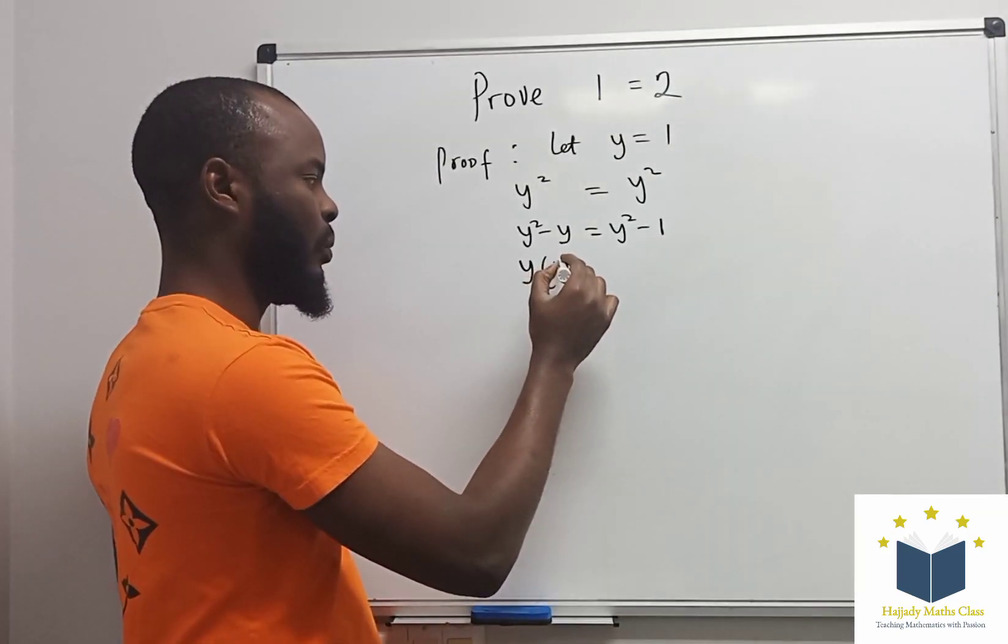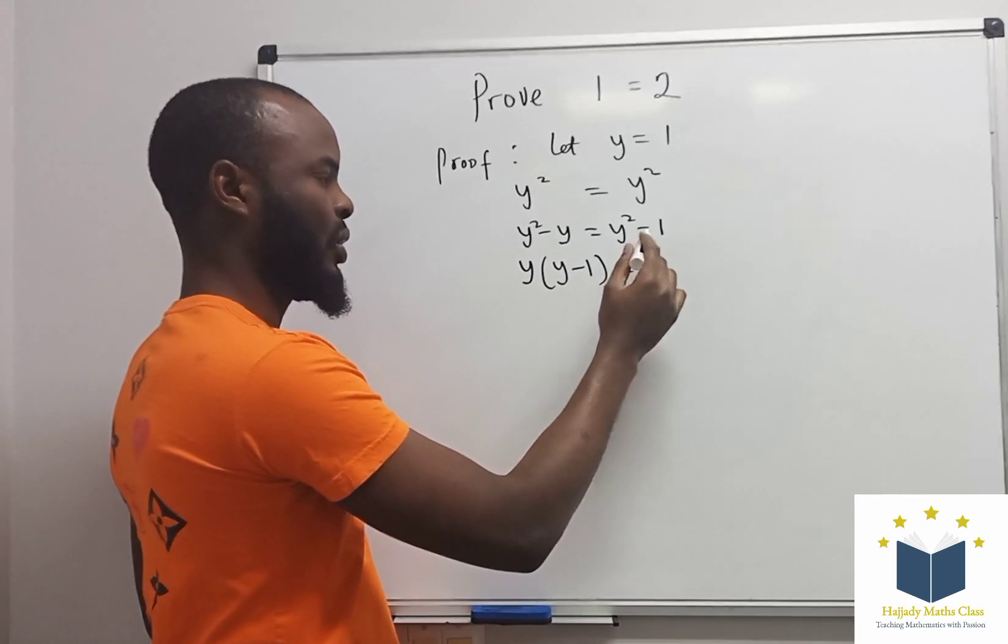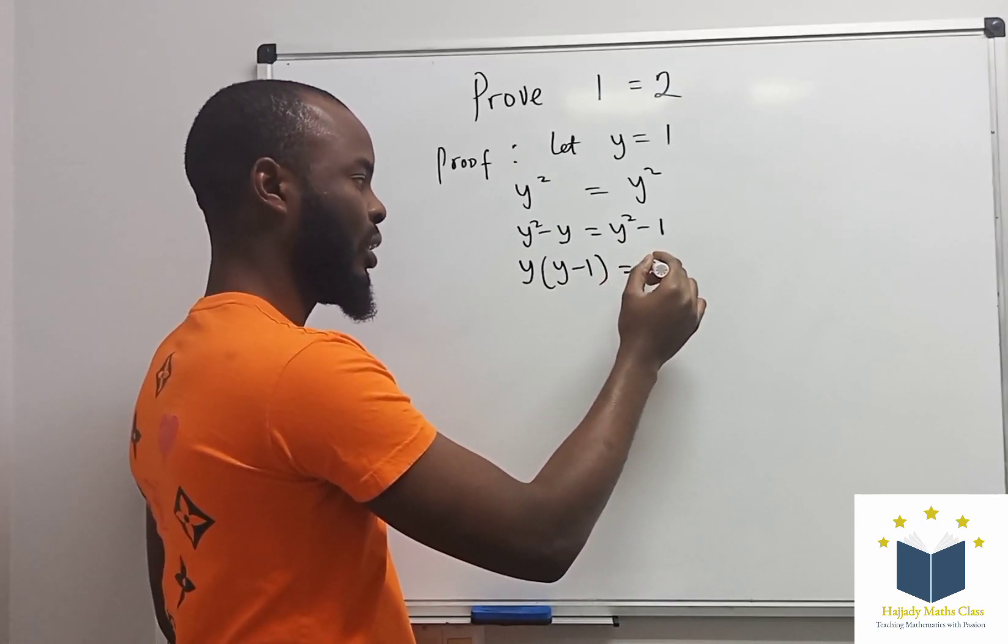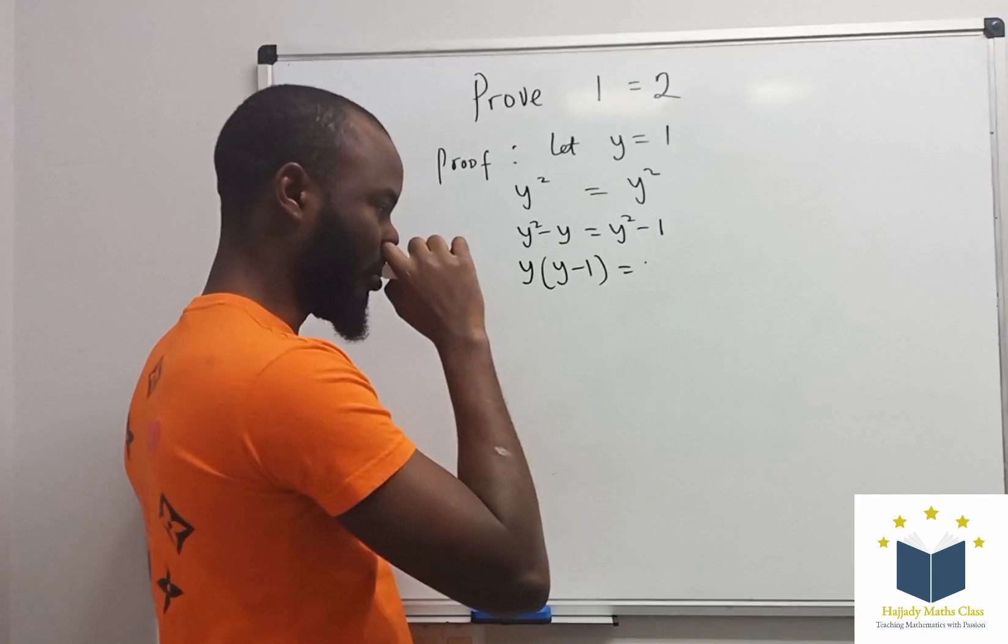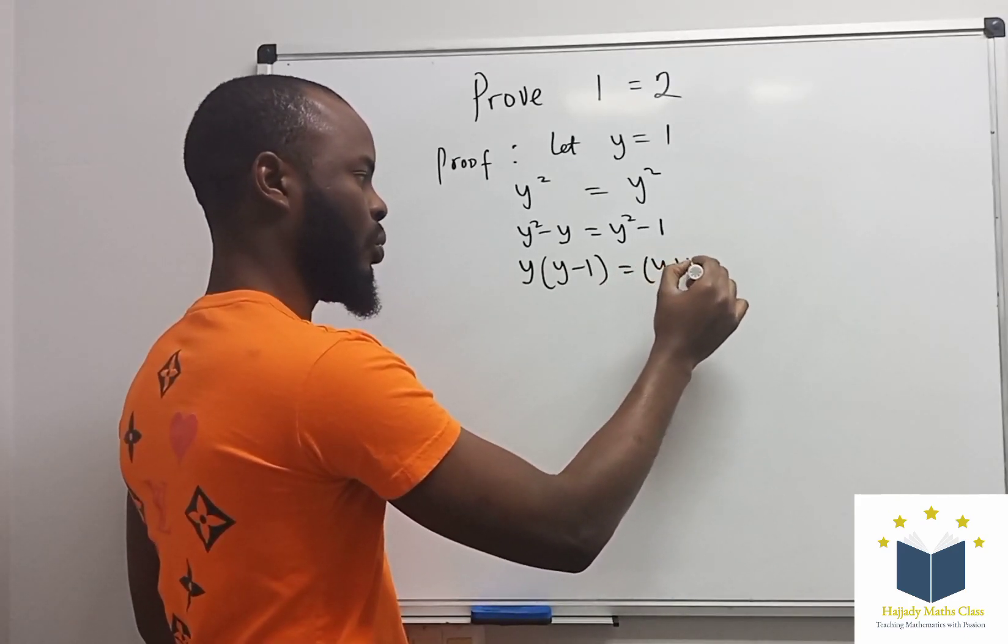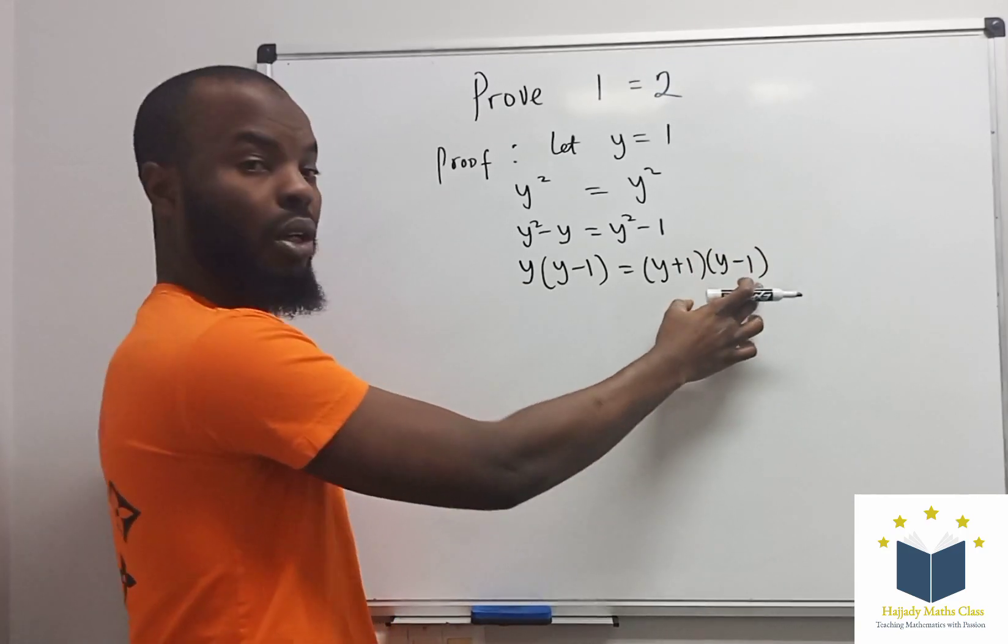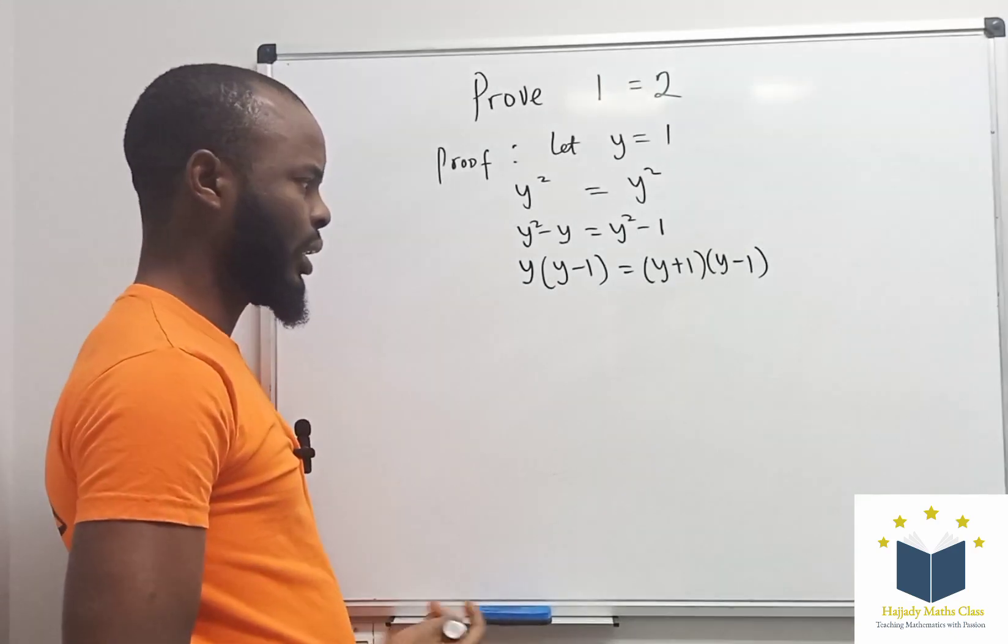And on the right side, I'm going to have y² - 1. Using the difference of two squares, I'm going to have (y + 1)(y - 1). Don't forget the rules of difference of two squares - that's what I used.